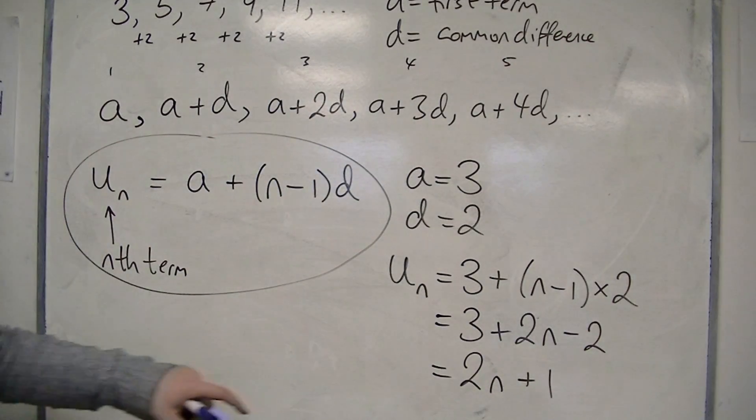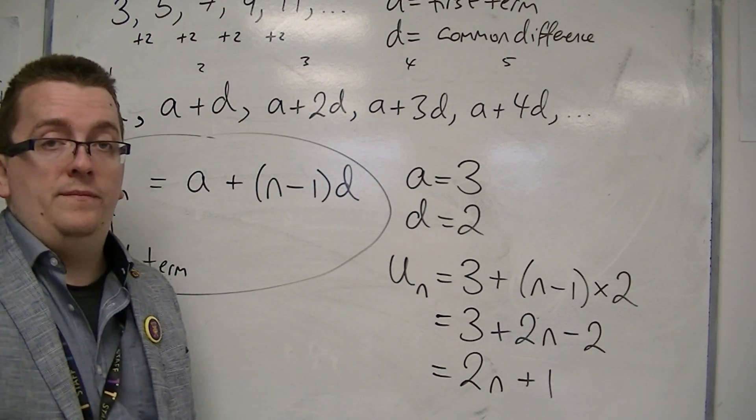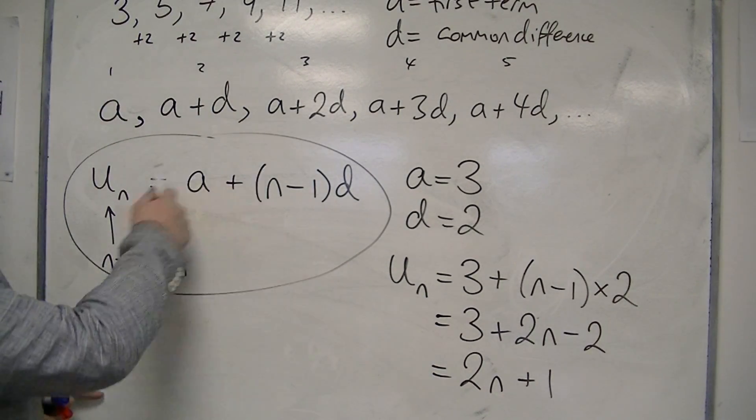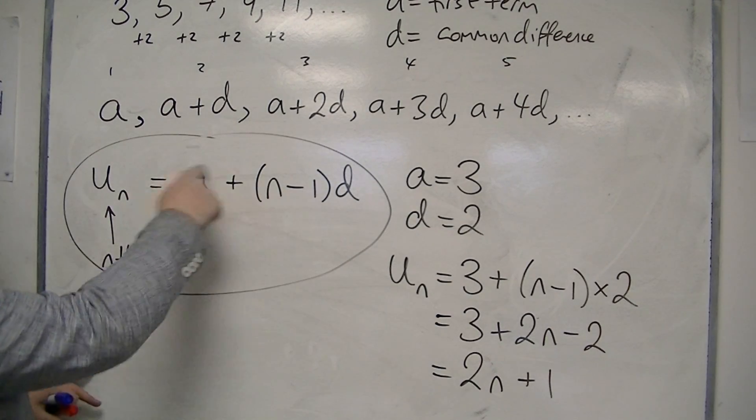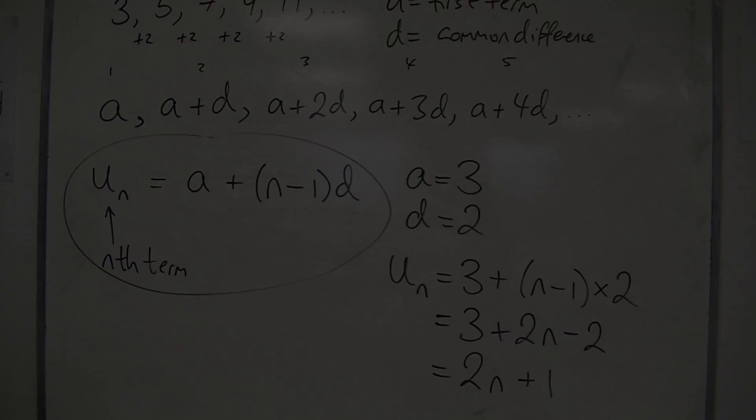And you may well be able to go from that sequence to 2n plus 1 quicker. But this, in general, is how we can define an arithmetic sequence. This is its nth term.